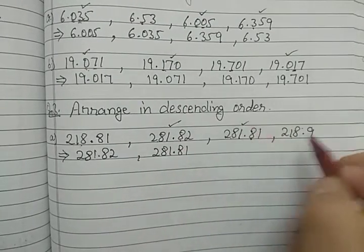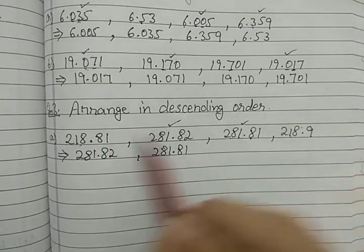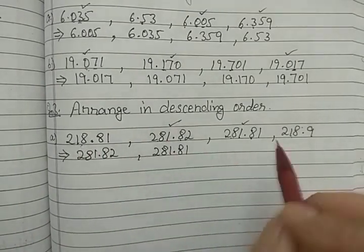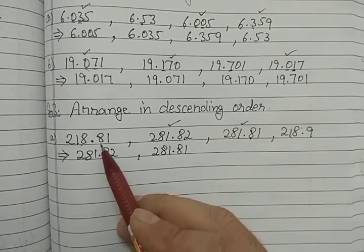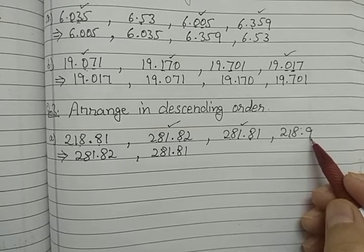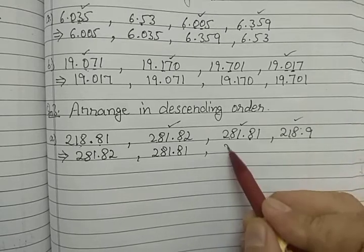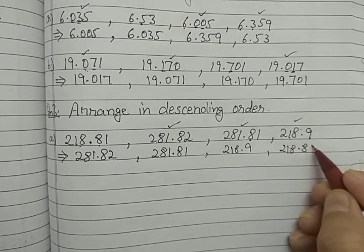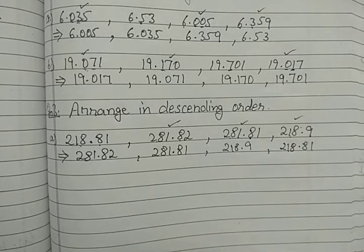The last remaining number, 218.81, is the smallest. So the descending order is: 281.82, 281.81, 218.9, 218.81. In this way we can arrange these numbers in descending order.